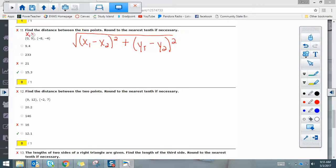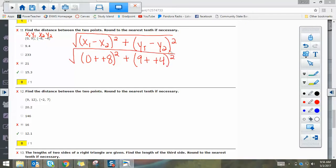So again, x1, y1, x2, y2. So x1 minus x2, that's 0 minus negative 8. Be careful with your signs here, so you have to change that to adding the opposite. y1 is 9, so that's 9 minus negative 4. Add the opposite again, square that one, and again, it's still under a big square root.